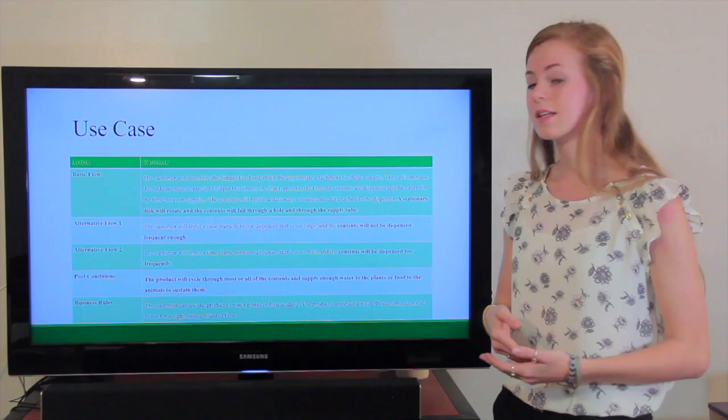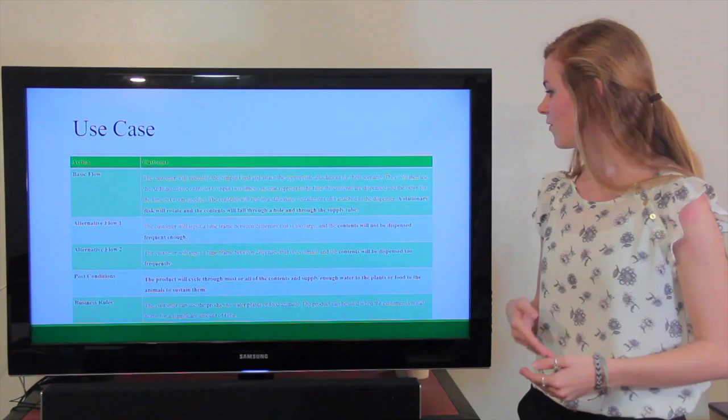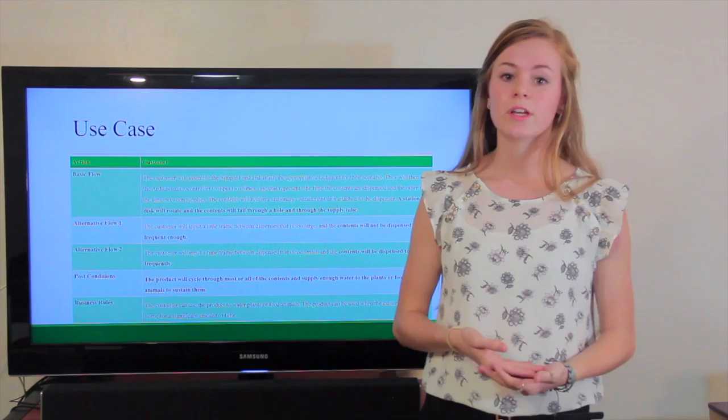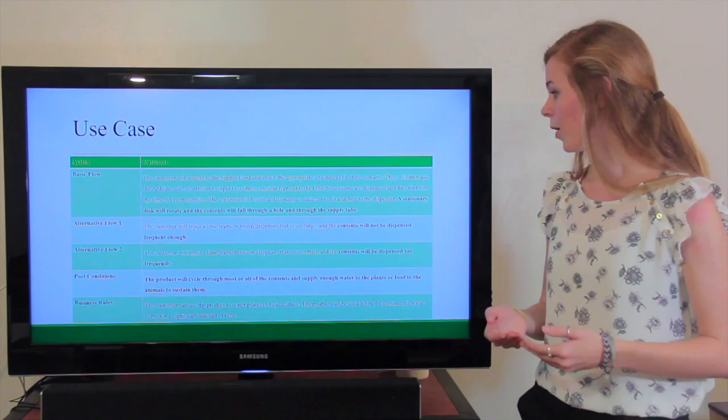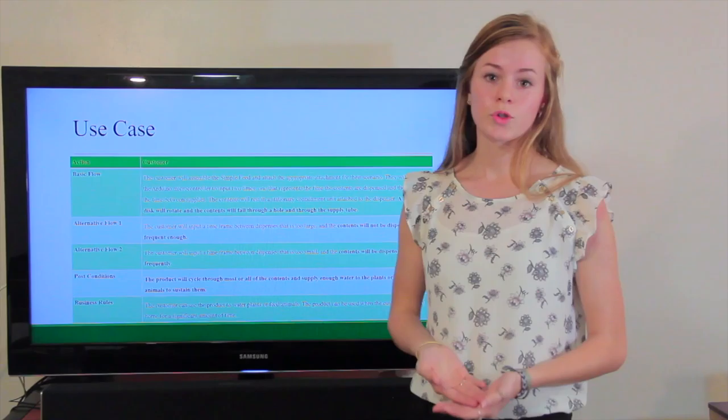For the basic flow, the customer will decide what kind of material they would like to dispense. They'll need to input two times: one that represents the time the contents are dispensed, and then the other will be the time between supplies. And then if all goes well, the stationary disk will rotate and dispense the material.